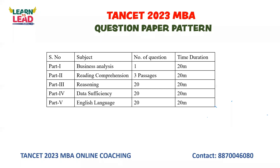Part 3 is ABCD — choose the right option type, where you will be asked reasoning questions. In Part 4, you will be asked data sufficiency and reasoning-based questions. Reasoning plans are important, and this time in 2022, all questions were based on plans.